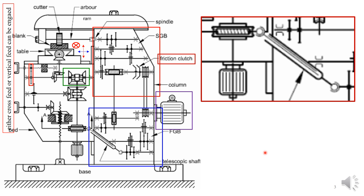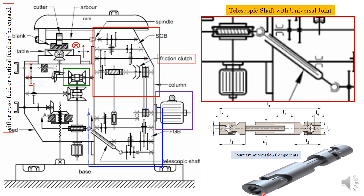There is one very interesting feature. This particular knee can be moved up and down. If it is moved up or down, the length between this particular point and this particular point — both within the feed gearbox and within the knee — is changing. If the knee is moved up, the distance between these two points changes. That is taken care of by a telescopic shaft with a universal joint. The length of the telescopic shaft can be changed, and the universal joint can take care of the angular misorientation depending on whether the knee has been moved up or down.